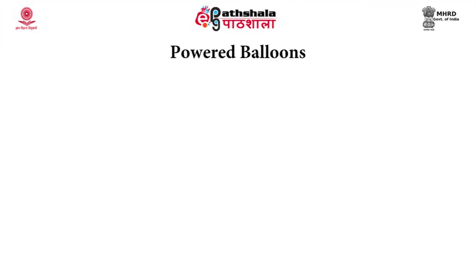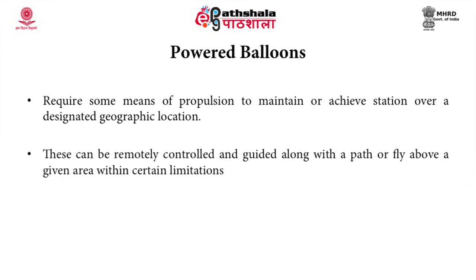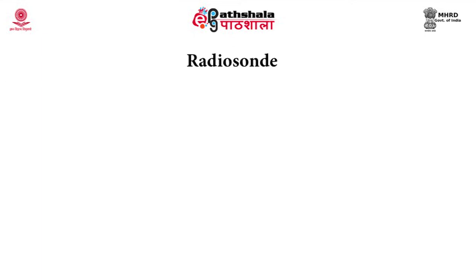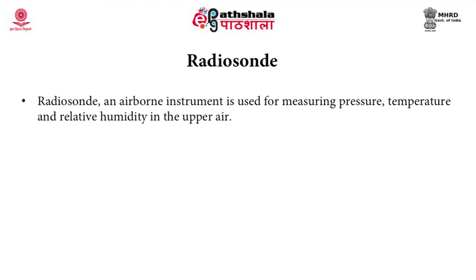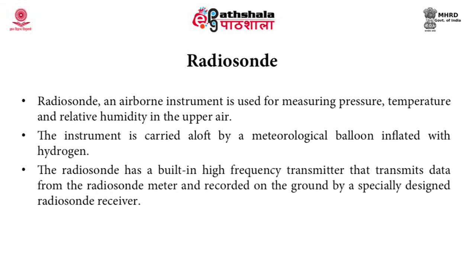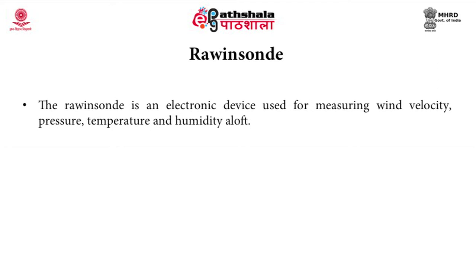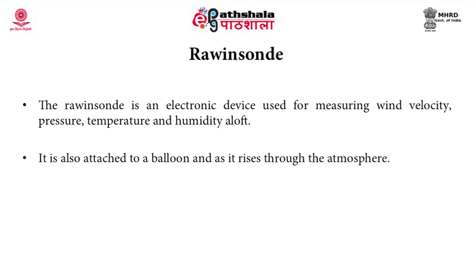Powered balloons require some means of propulsion to maintain or achieve station over a designated geographic location. They can be remotely controlled and guided along a path or flown above a given area. A radiosonde is an airborne instrument used for measuring pressure, temperature, and relative humidity in the upper air; it is carried aloft by a meteorological balloon inflated with hydrogen and transmits data via a built-in high-frequency transmitter to a ground receiver. A rawinsonde is an electronic device used for measuring wind velocity, pressure, temperature, and humidity aloft, also attached to a balloon as it rises through the atmosphere.